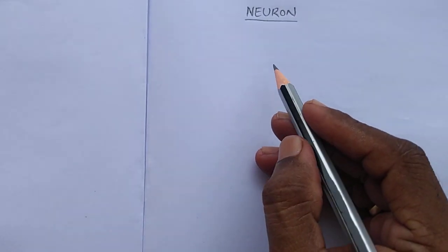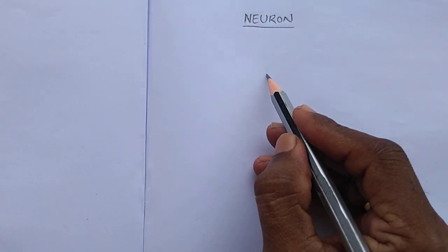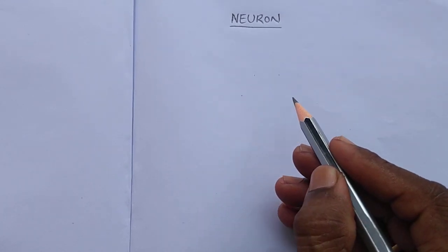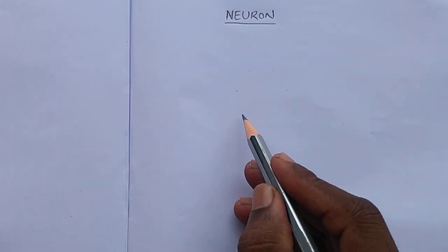In this video we are going to learn one of the easiest diagrams in 10th class, it is neuron, very easy to draw. First of all, for this we have to put some dots like this to get a good diagram.